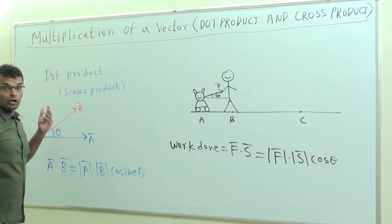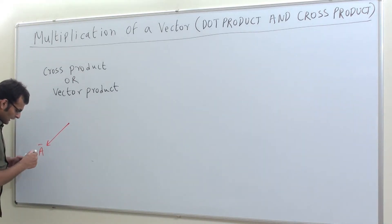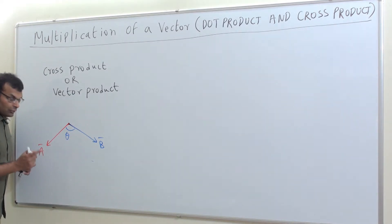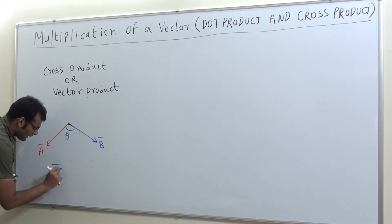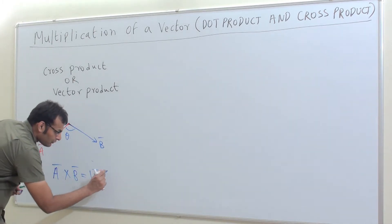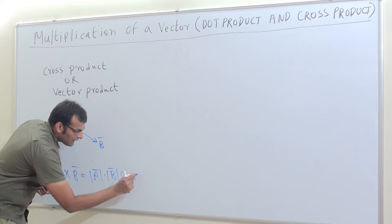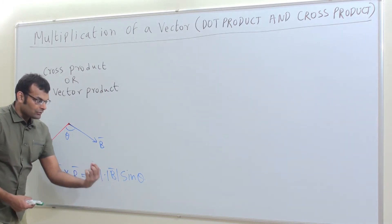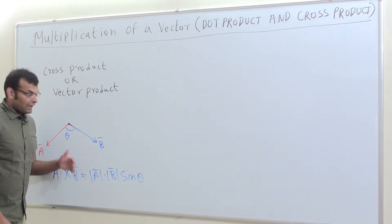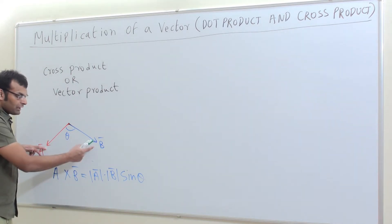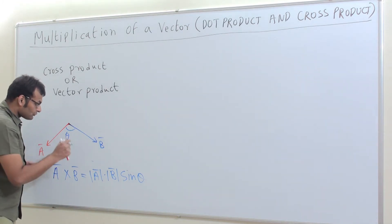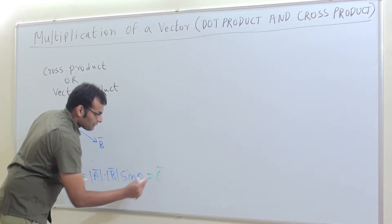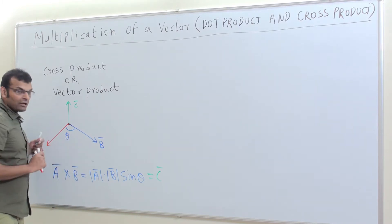Now let us discuss vector product or cross product. Let me take vectors A bar and B bar making an angle theta. As per the formula of cross product, A bar cross B bar is equal to magnitude of A bar into magnitude of B bar into sine of the angle between the two vectors. The effect of A bar cross B bar is felt in a direction perpendicular to the plane consisting of the two vectors. Let this result vector be C bar, so A bar cross B bar equals C bar.